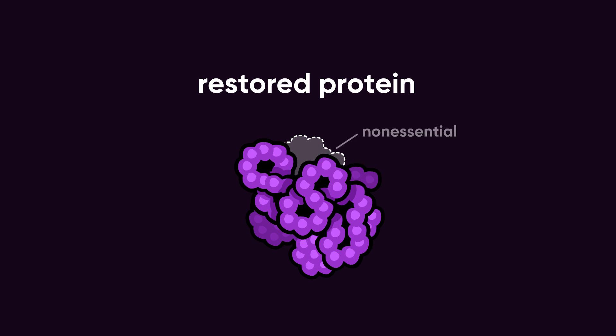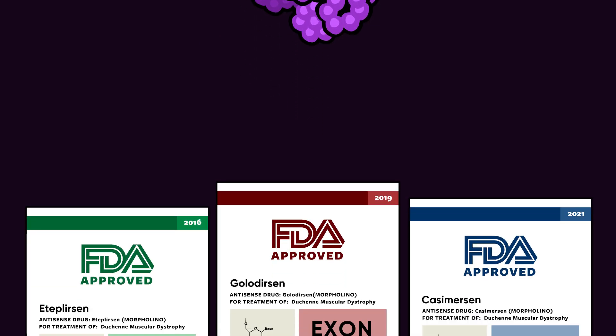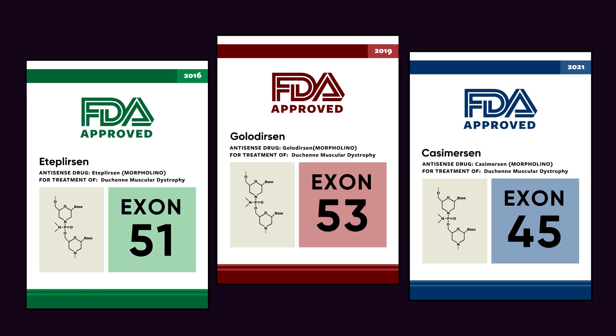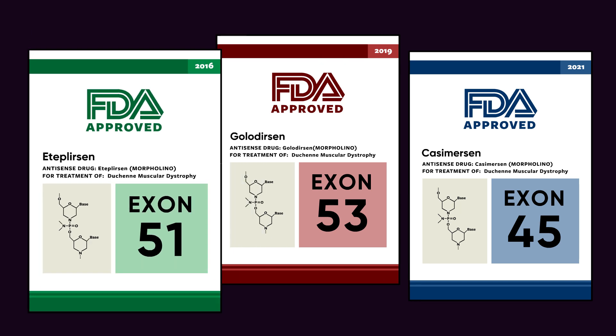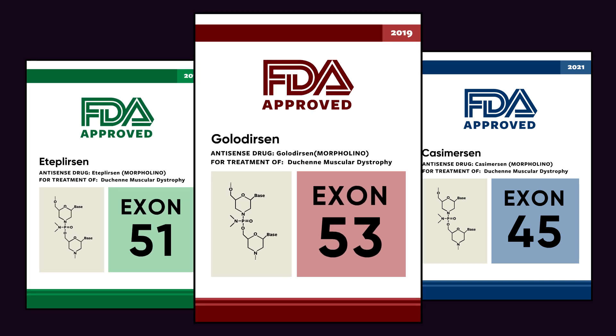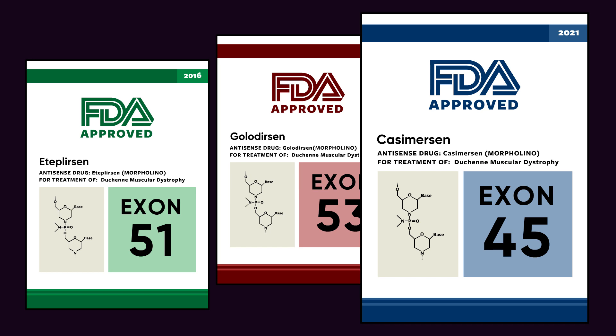This is the strategy behind several FDA-approved morpholino oligo drugs for Duchenne muscular dystrophy, which skip exons of the human dystrophin gene, including Eteplirsen for exon 51, Golodirsen for exon 53, and Casimirsen for exon 45.